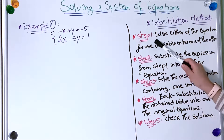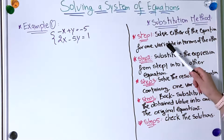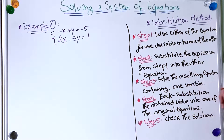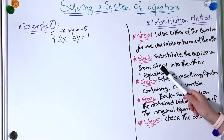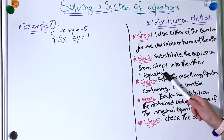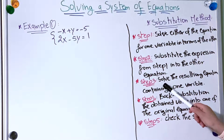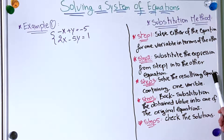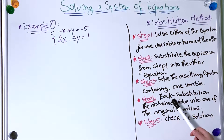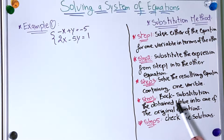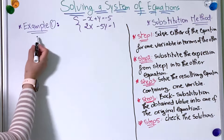The first step is to solve either of the equations for one variable in terms of the other. The second step is to substitute the expression from step one into the other equation. The third step is to solve the resulting equation containing one variable. The fourth step is back-substitution of the obtained value into one of the original equations. The last step is to check the solutions.